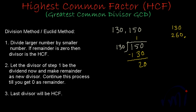So in this case we are getting remainder as 20 which is not 0. That means we have to continue this procedure. So step number 2 says let the divisor of step 1 be the dividend now. So the divisor in step 1 was 130 and let me make it the new dividend and this 20 or the remainder will become the new divisor.